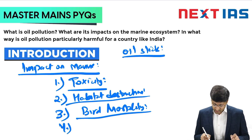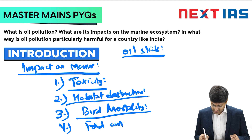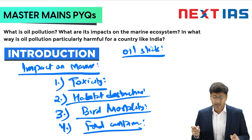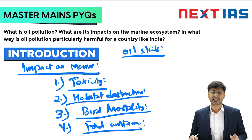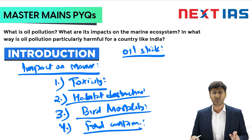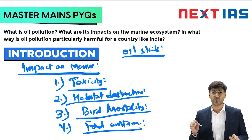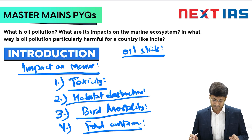The fourth impact is food contamination — the food chain gets affected. A good example is the 2021 oil spill in the Red Sea, which led to significant food contamination.